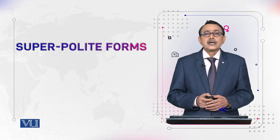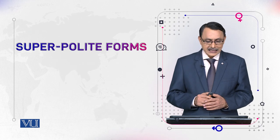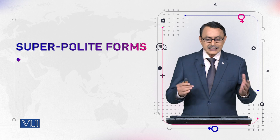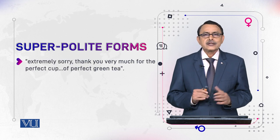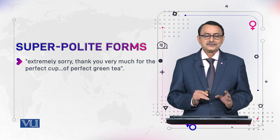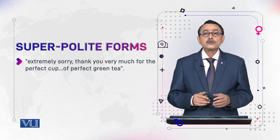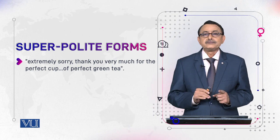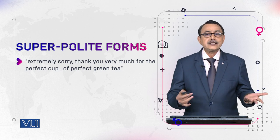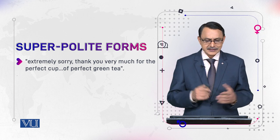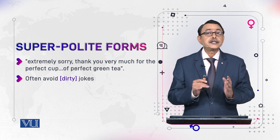Similarly, women use super-polite forms. For example, they won't just say 'sorry' — they would say 'extremely sorry.' Instead of 'thank you,' they say 'thank you very much' or 'thank you very very much.' They also often avoid dirty jokes.